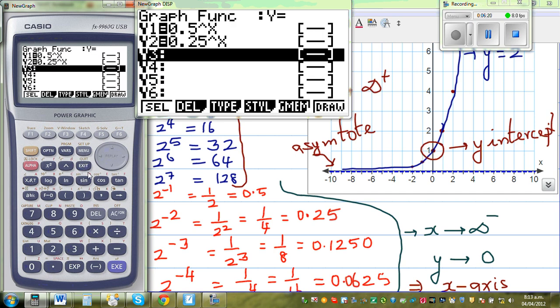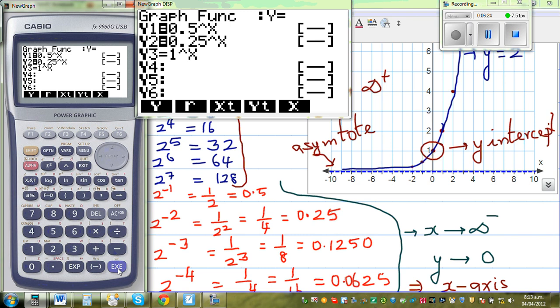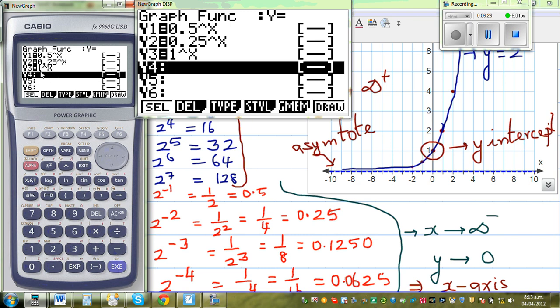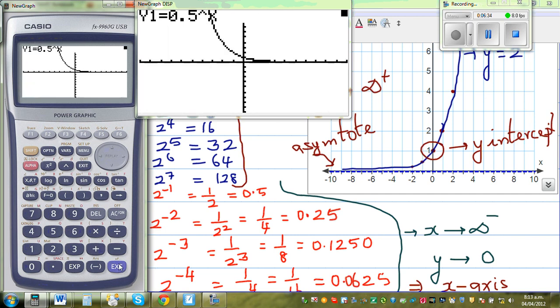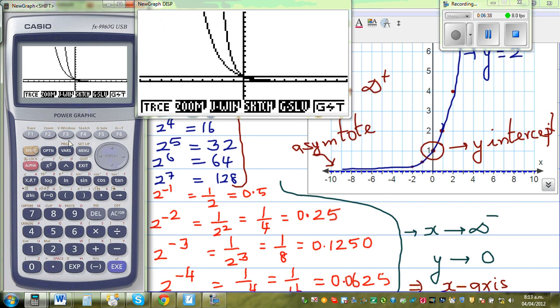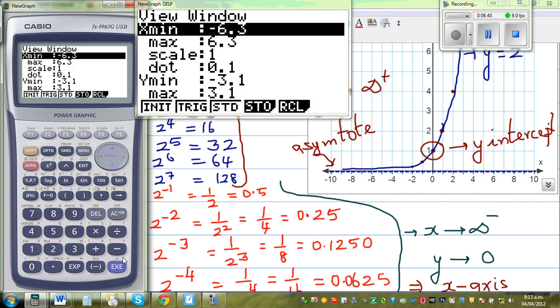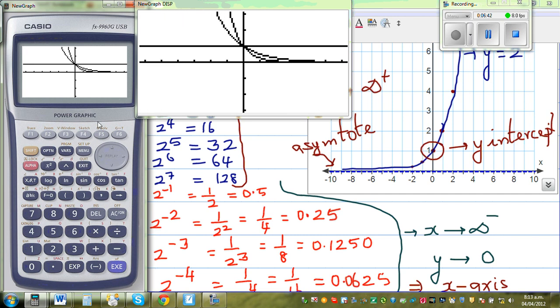And what happens if it is one? That's really interesting. One to the power x. Can you visualize one to the power? Now, when you raise one by any number, what will be the answer? One to the power 2 is 1. One cube is 1. So this is very interesting. So let me show you this. Let me draw it. So this is, this line is 1 to the power x.